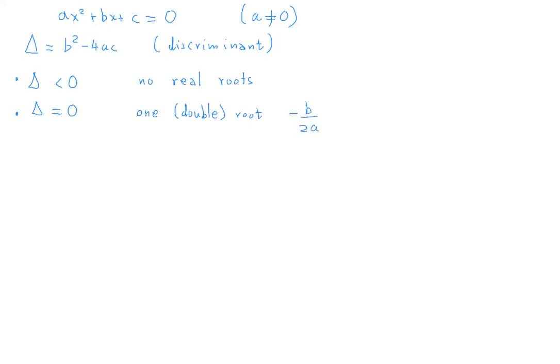And the last case, maybe the most interesting one, is when we have delta greater than zero, then we have two distinct real roots, which are given by the following formula, which is known as the quadratic formula: minus B plus or minus square root of delta divided by two A. Of course, again, you can rewrite this as minus B plus or minus square root of B squared minus 4AC over two A.